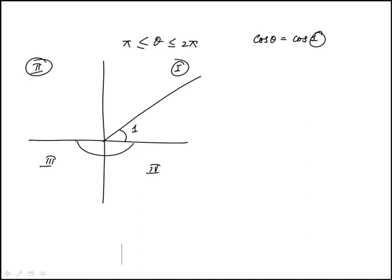Cosine 1 is positive. We're looking for which quadrant is cosine positive other than the first, which is the fourth quadrant. And it's going to be this, where this is also one radian.